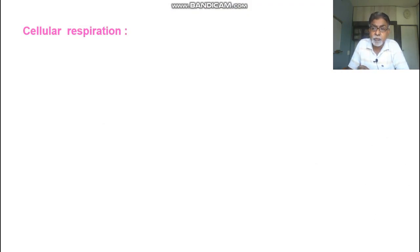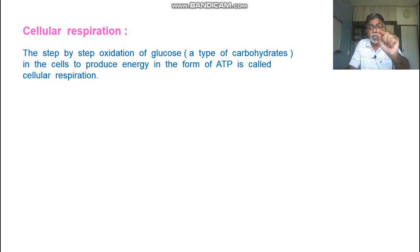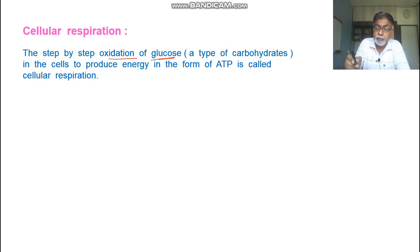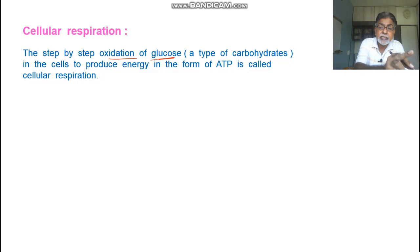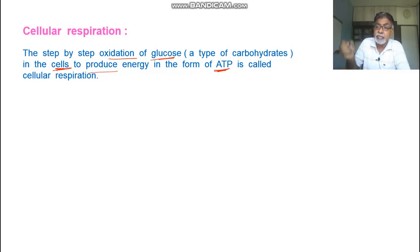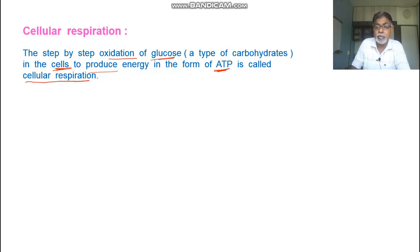What is cellular respiration? It is the step-by-step oxidation of glucose. The main nutrient used for production of energy is carbohydrate, and during digestion, carbohydrates are converted into glucose. So, cellular respiration is the oxidation of glucose in the cell to produce energy in the form of ATP.